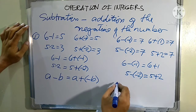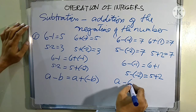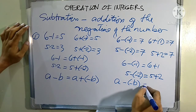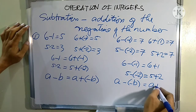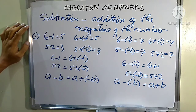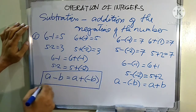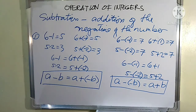So we can make a conclusion: any number a subtracted by another negative number b is equal to a plus b. This will be our rule in subtracting two numbers.